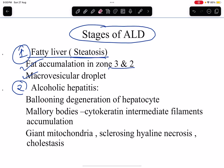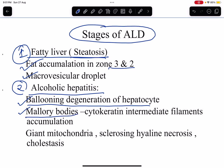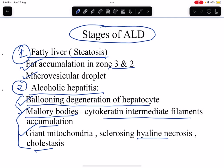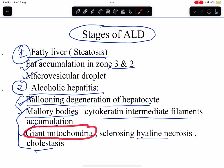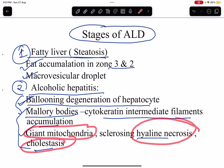The second stage is alcoholic hepatitis. What happens here? There is ballooning degeneration of hepatocytes, Mallory body formation — Mallory bodies are cytokeratin intermediate filament accumulations inside the cell — giant mitochondria, sclerosing hyaline necrosis, and cholestasis.